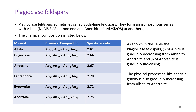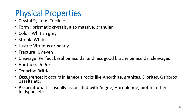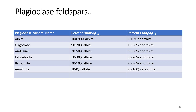Physical properties of plagioclase feldspars: they crystallize in the triclinic crystal system. Habit is prismatic, also massive and granular. Color is whitish gray, streak is white, luster is vitreous or pearly, fracture is uneven. Cleavage is perfect basal pinacoidal and less good brachypinacoidal, hardness 6 to 6.5, tenacity brittle. They occur in igneous rocks like granites, diorites, gabbros, and basalts, and are generally associated with augite, hornblende, biotite, and other feldspars.